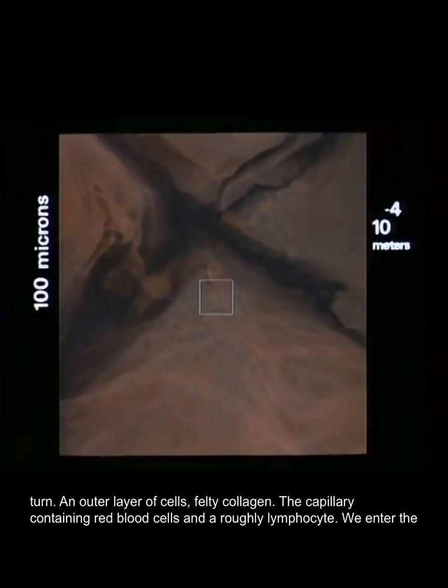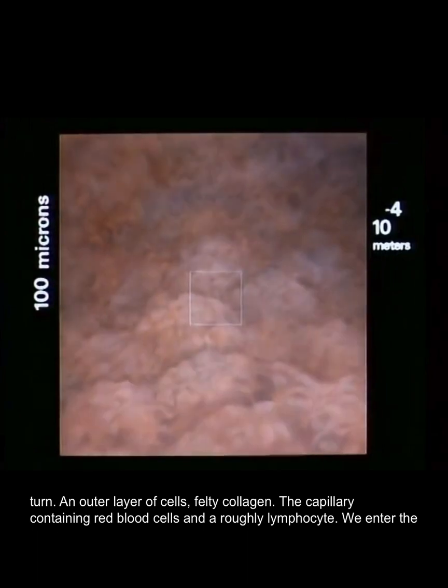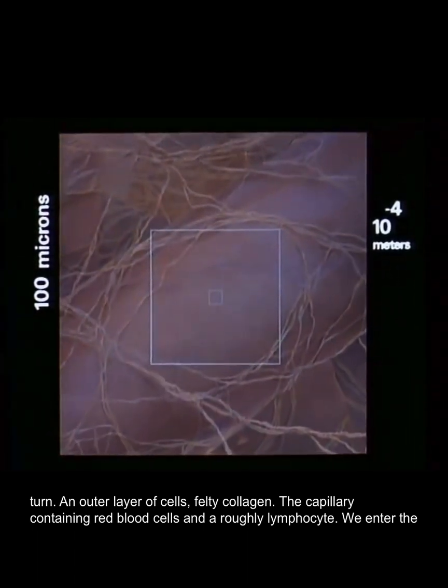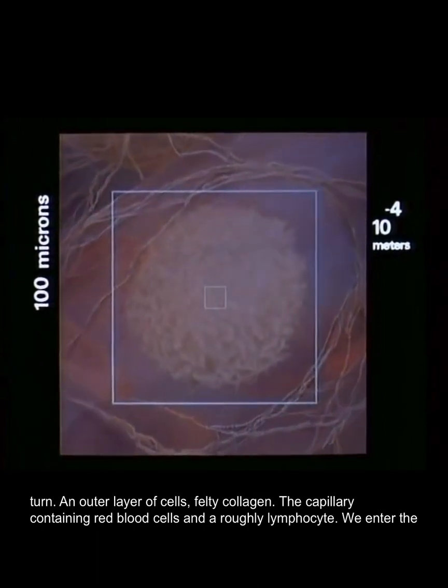Skin layers vanish in turn: an outer layer of cells, felt, collagen. The capillary containing red blood cells and a lymphocyte.